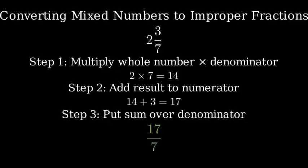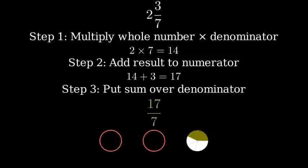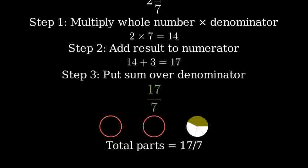Let's visualize why this works. 2 whole circles represent our 2 whole numbers, and 3 sevenths represents 3 parts out of 7 of another circle. When we combine them all together and count the parts, we get 17 sevenths total.